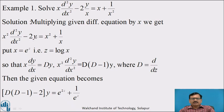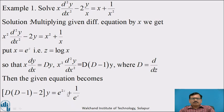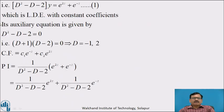To solve the homogeneous linear equation, again put x equal to e raised to z, that is z equal to log x, so that x dy by dx equal to Dy, and x squared d squared y by dx squared equal to D(D minus 1) of y, where D stands for d/dz. Substituting all these values in the given equation, we get D(D minus 1) minus 2 of y equal to e raised to 2z plus e raised to minus z. Simplifying, we get D squared minus D minus 2 of y equal to e raised to 2z plus e raised to minus z. Call this equation number 1.